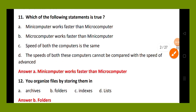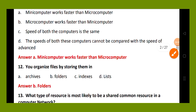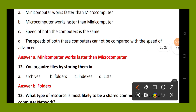Question number 12. You organize files by storing them in: option A, archive; option B, folders; option C, index; option D, list. The right answer is option B, folders. You organize files by storing them in folders.